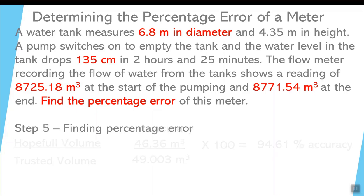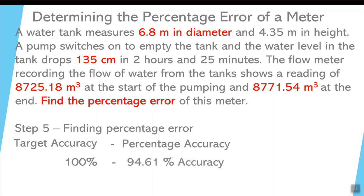Now percentage error tells you how close it is to perfection. And it's just a simple subtraction. We know that our target is 100%. We want to be perfect. So 100% minus the accuracy, which was 94.61% accuracy, and that works out to an over-under. In this case, the meter was less accurate than perfection. It was 5.39% under. Now if that meter would have read a value higher, then it would have been whatever that difference was, but it would have been over.